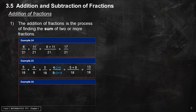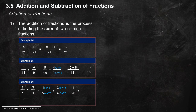Example 16: 1 over 5 plus 3 over 4. Upscale both fractions to a common denominator of 20. Add the fractions with the same denominator: 4 plus 15 over 20 equals 19 over 20.